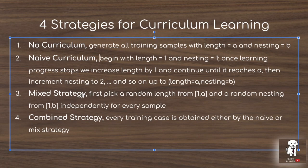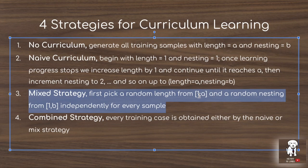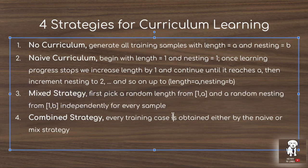The third strategy is the mixed strategy: randomly sample difficulty by picking a random length from one to A and a random nesting from one to B. This differs from no curriculum because no curriculum only ever samples from the final target difficulty. The fourth is the combined strategy, where every training sample is obtained by sampling from both the naive curriculum's progressive structure — going from length one/nesting one upward — as well as the mixed strategy, simultaneously sampling from both distributions.